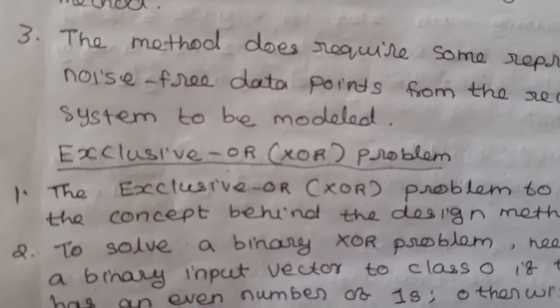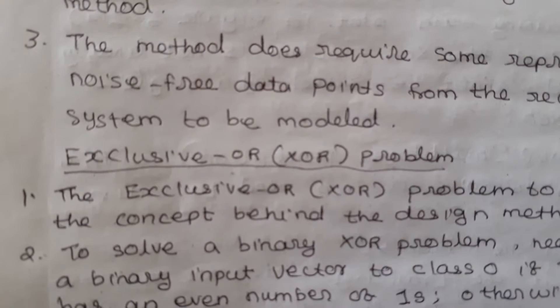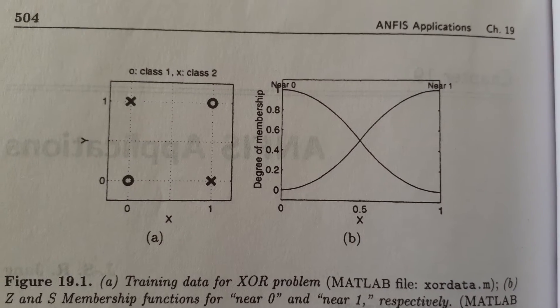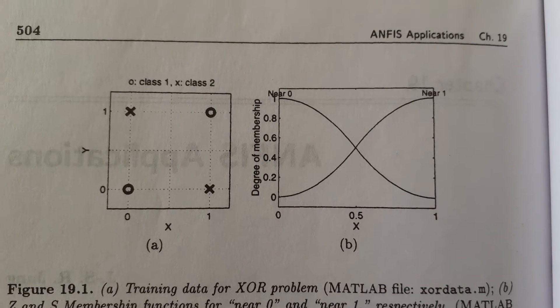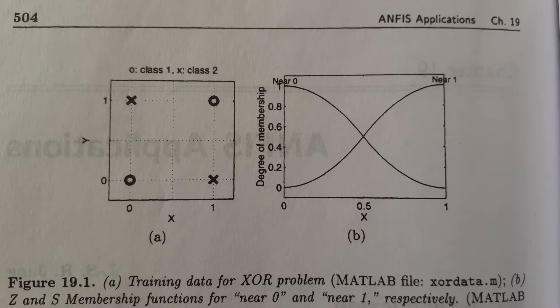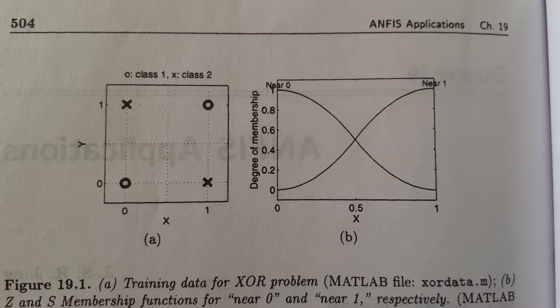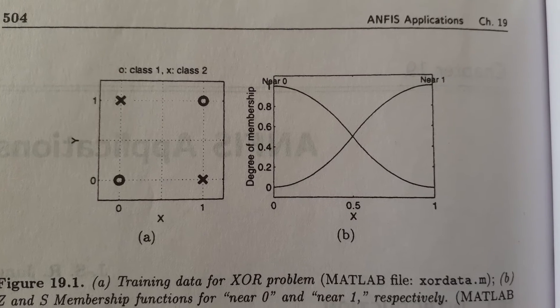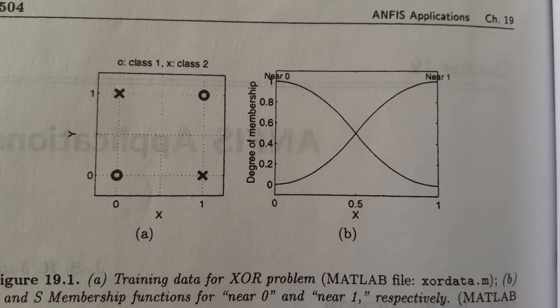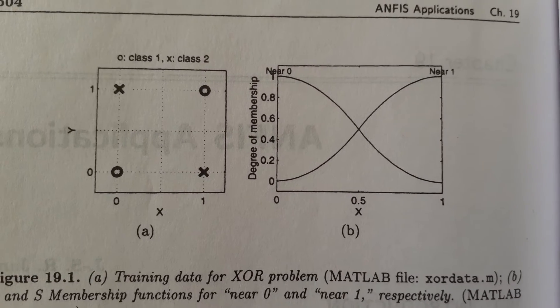We revisit the exclusive OR problem to demonstrate the concept behind this design method. To solve a binary XOR problem, you need to classify a binary input vector to class 0 if the vector has an even number of ones, otherwise it is assigned to class 1. The desired behavior is described by the following truth table.